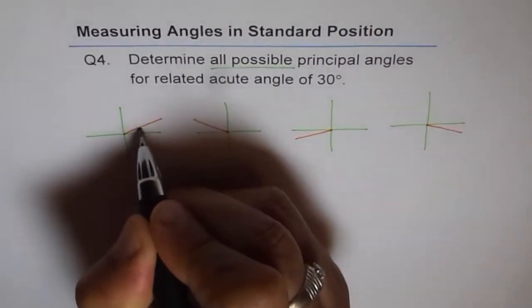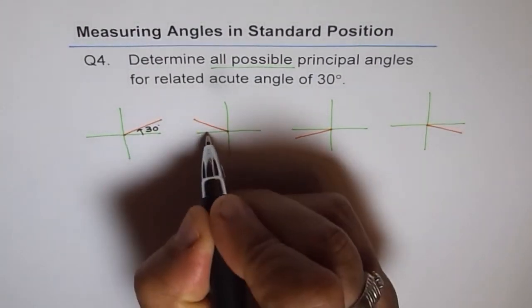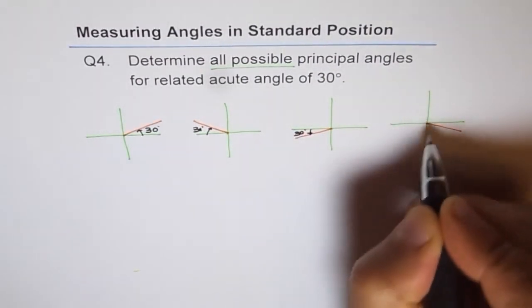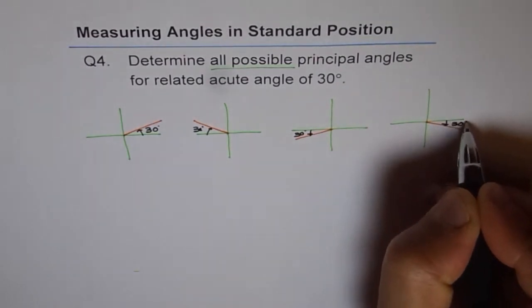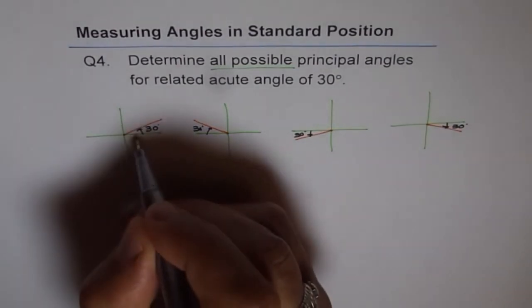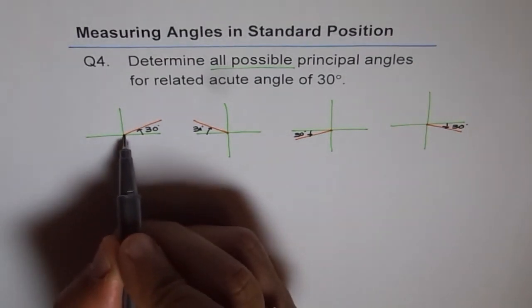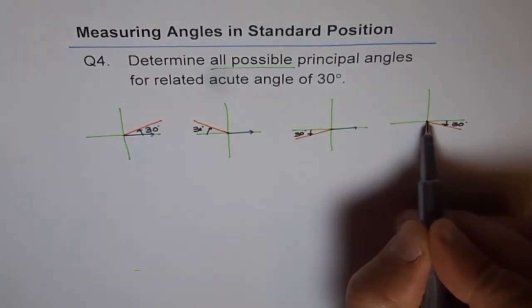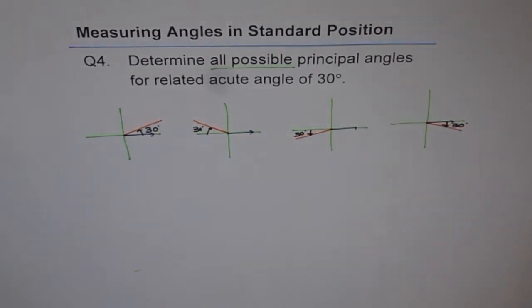That is how I am taking it — you can check this with your teacher. So these are my related acute angles. Related acute angles are always positive and between 0 and 90 degrees. To find the principal angle, we go from the initial arm which is along the positive x-axis. This is a new topic and these are the first few questions on it, so let me repeat: in standard position we always start from the vertex.